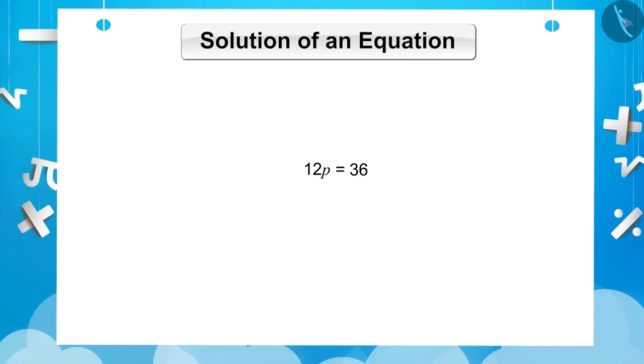In order to have only variable P in LHS, we have to divide both sides by 12. By doing this, the new LHS will be P and the new RHS will be 3. We will get P is equal to 3, which is the solution of this equation.